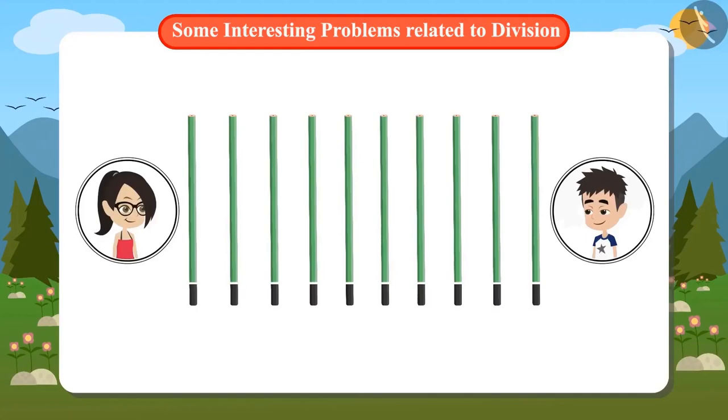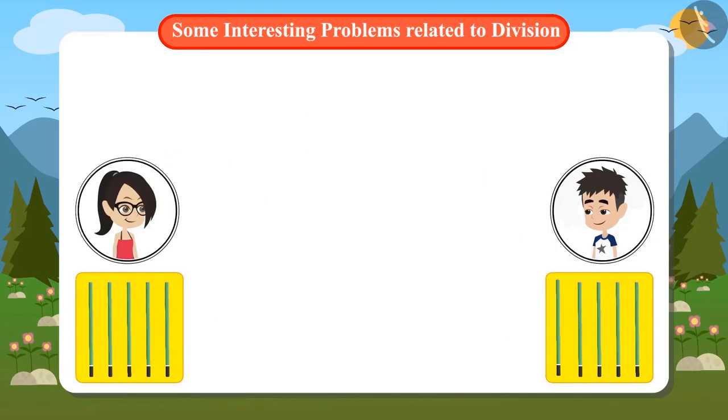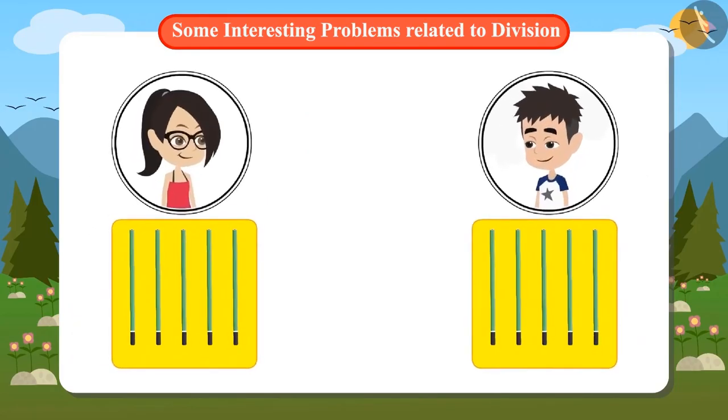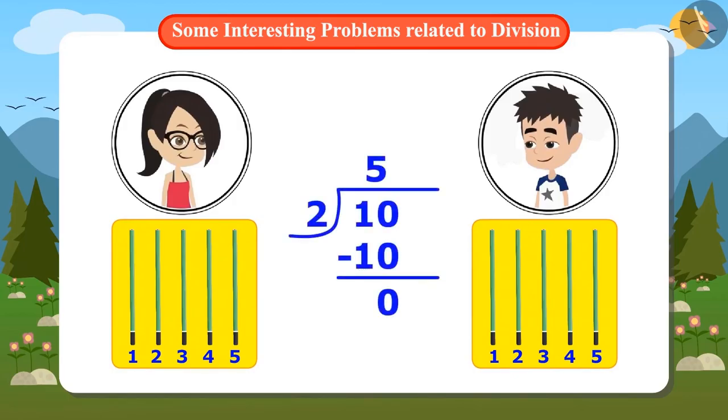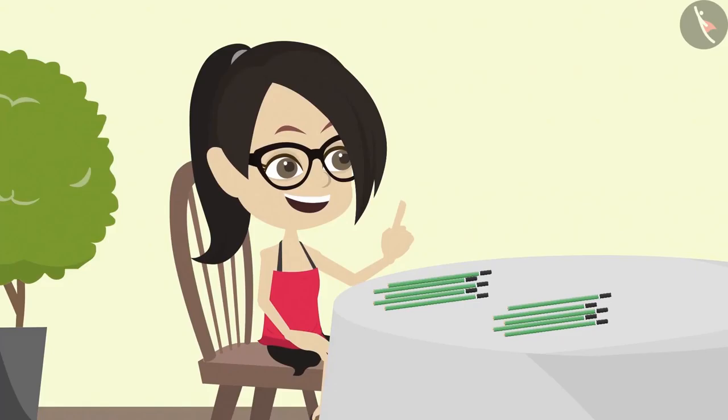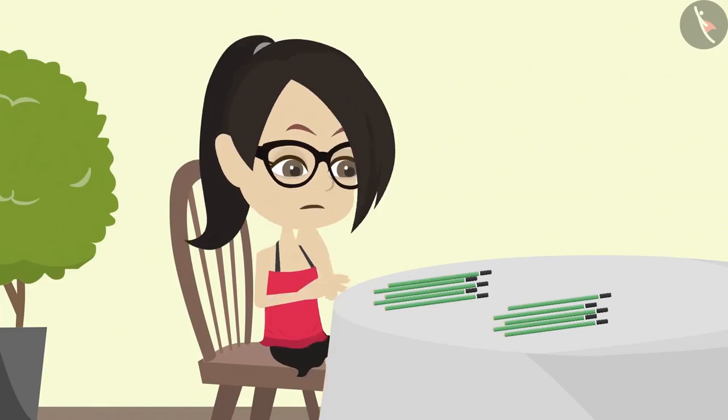Well, now I understand. Even when I equally distributed the pencils one by one, there were five pencils on my brother's and my part. But I did not need to do that. I can know immediately by dividing that both will have five pencils. Vandana has understood that she can divide and distribute things.